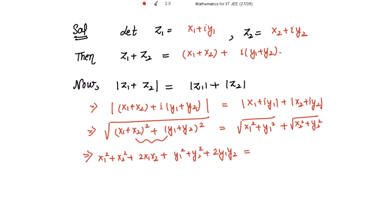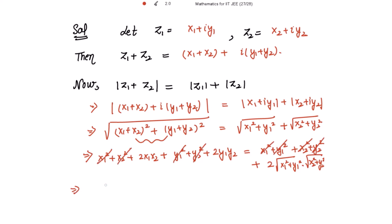Using the formula (a plus b)² equals a² plus b² plus twice of ab, the right side becomes square root of x₁² plus y₁² times square root of x₂² plus y₂², all multiplied by two. These common terms cancel out and we have twice of x₁x₂ plus y₁y₂ equal to twice of square root of (x₁² plus y₁²) into square root of (x₂² plus y₂²).